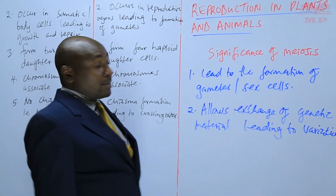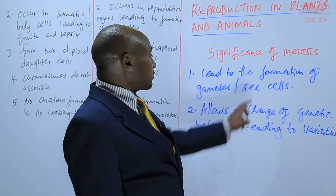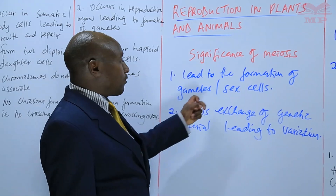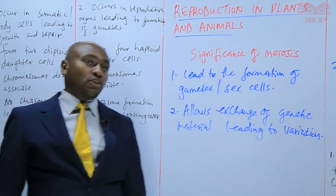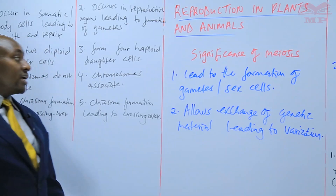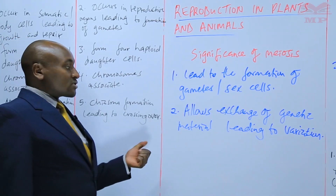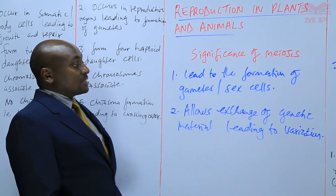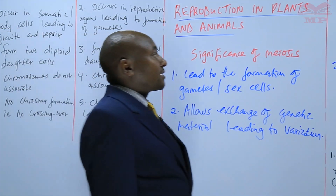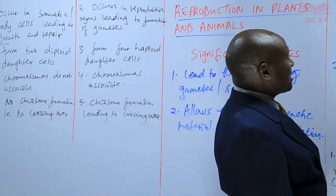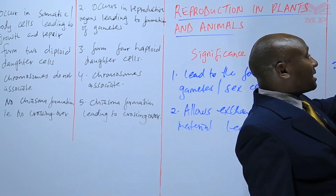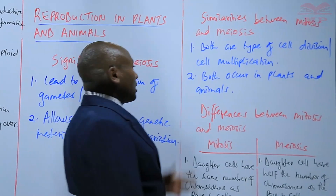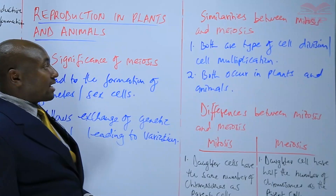Today, just a recap of what we have learned. We have learned the significance of meiosis: it leads to the formation of gametes, or the sex cells, in organisms. Number two, it also allows exchange of genetic material that leads to variation. The similarities between the two processes are that both are types of cell division and lead to cell multiplication, and both occur in plants and animals.